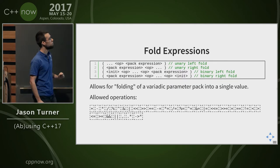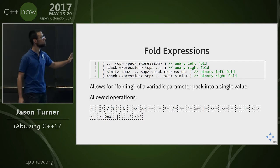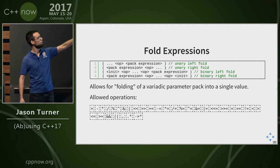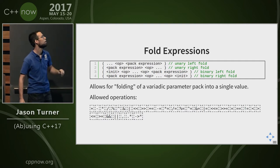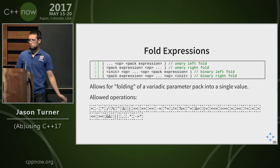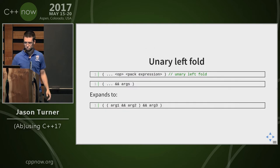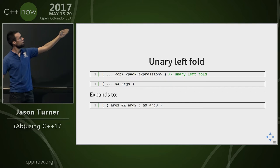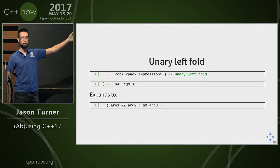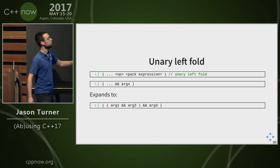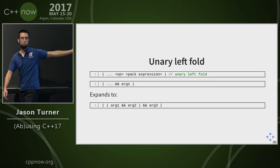So, fold expressions — this is added in C++17. There are four different types: unary left, unary right, binary left, and binary right. These are all the different operators you're allowed to use with fold expressions. Unary left fold uses the literal dot-dot-dot — that's not just a placeholder, that's the expansion — then whatever operator you want and the args, and it gets expanded like this.